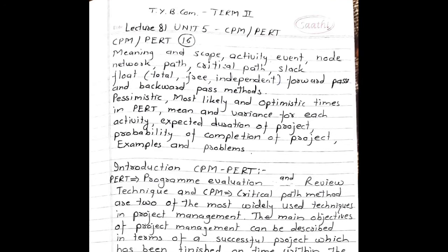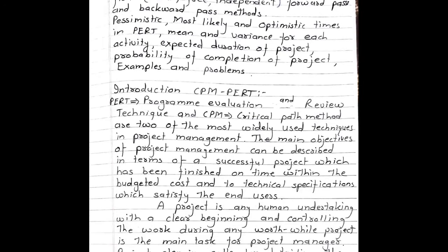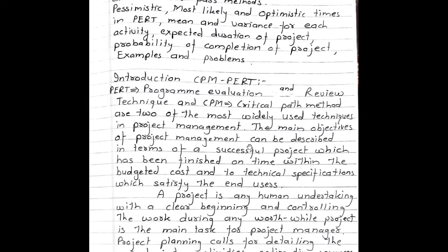Introduction: CPM-PERT. PERT stands for Program Evaluation and Review Technique and CPM stands for Critical Path Method. These are two of the most widely used techniques in project management.